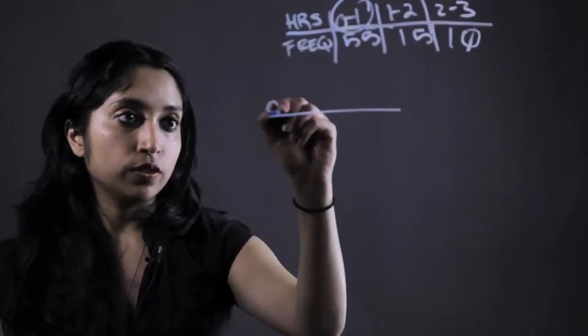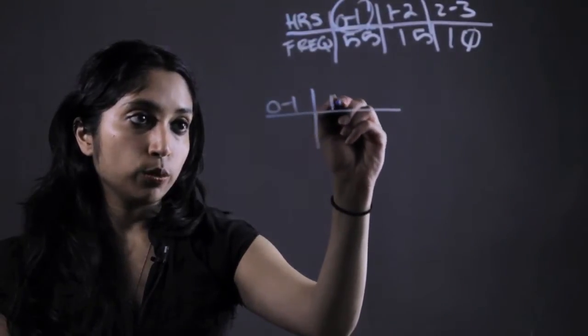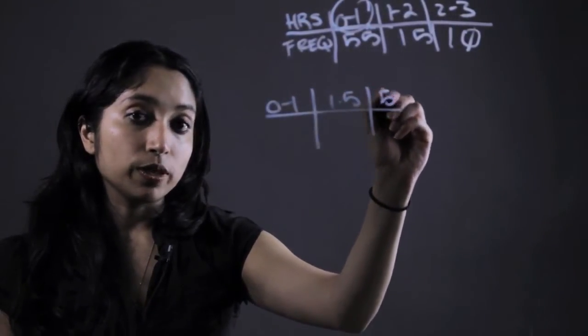So for example, for the interval 0 to 1, the midpoint would be 1.5, and the frequency would be 55.